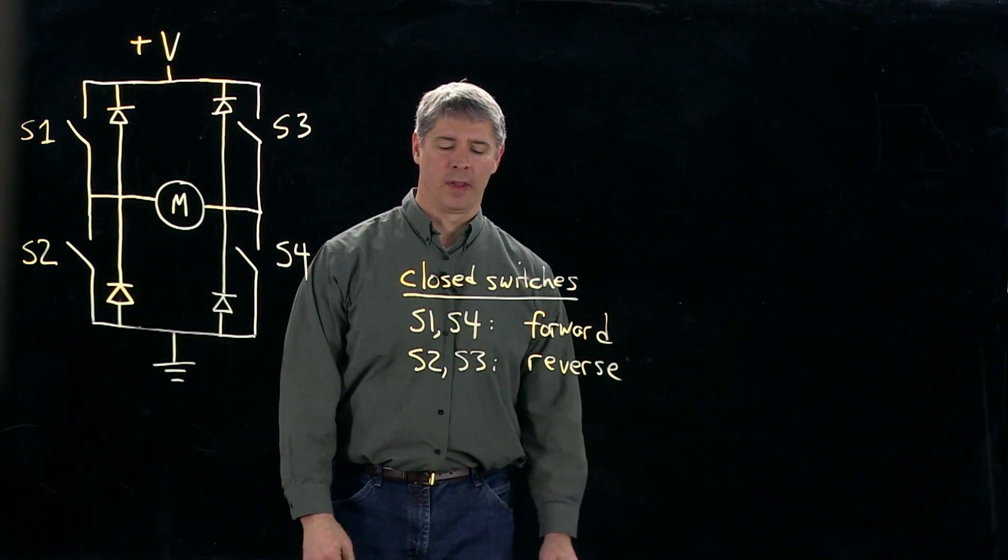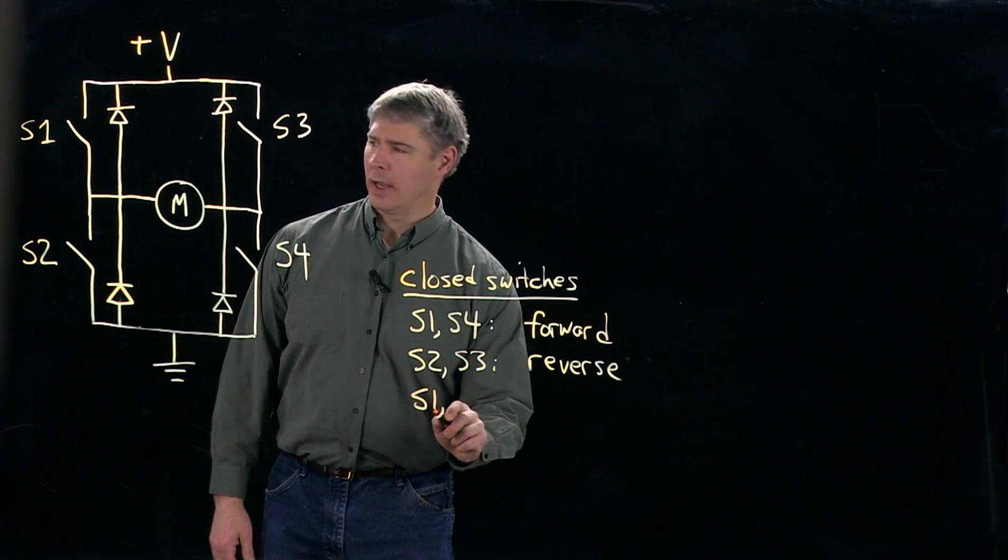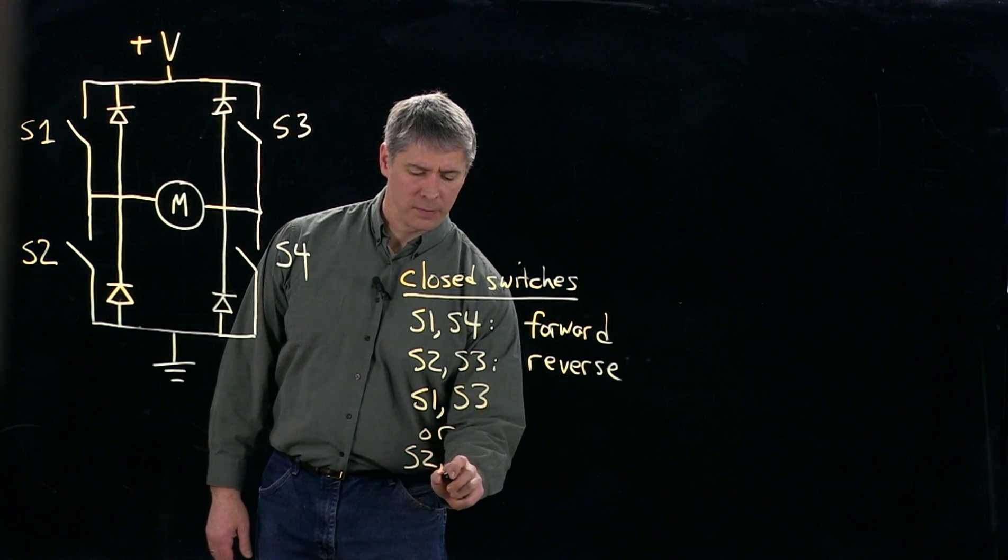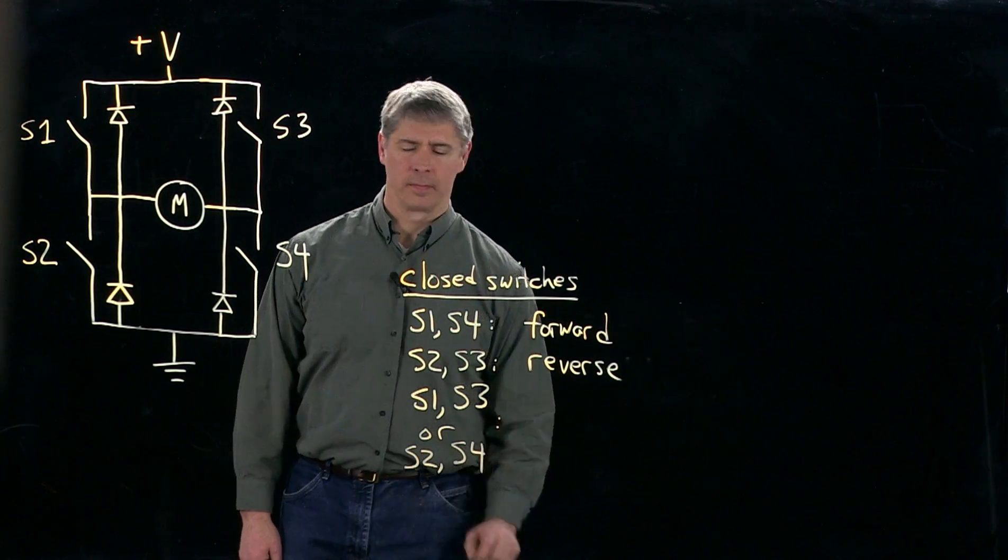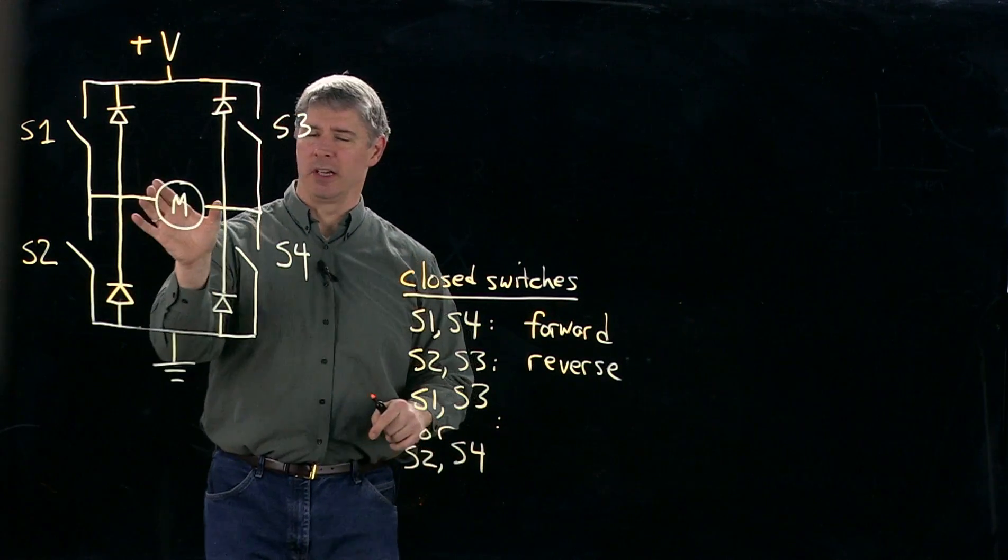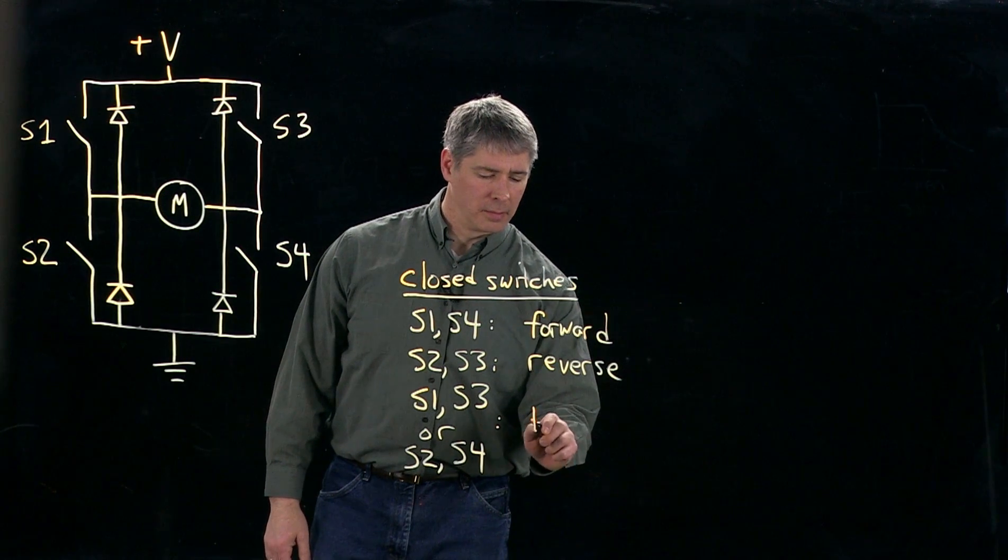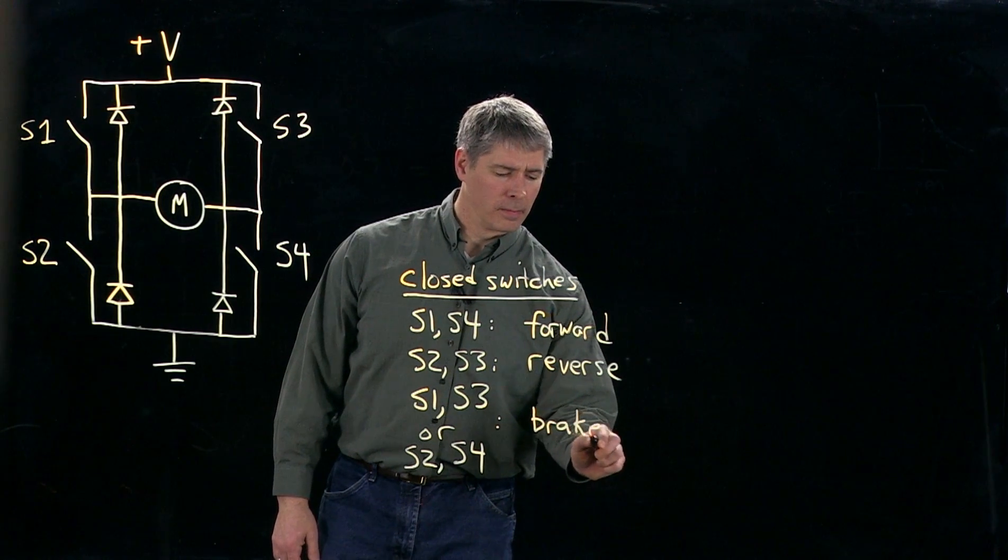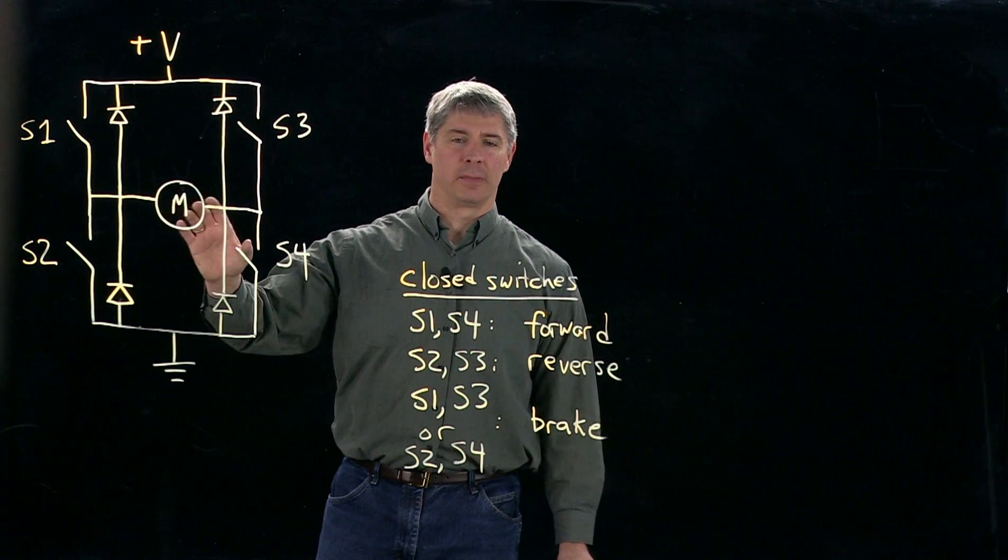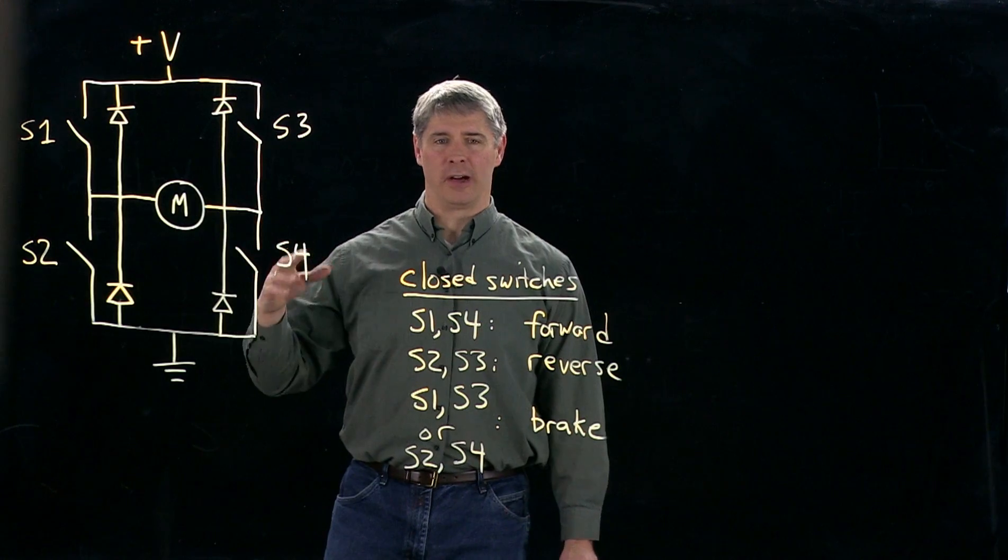And if I have S1 and S3 closed, or S2 and S4, then both sides of the motor are seeing the same voltage. So this is what we call brake mode, or dynamic braking. By forcing the voltage across the motor to be zero, we're essentially slowing it down. We're using short circuit damping to slow down the motor.